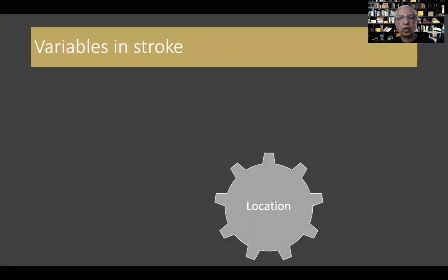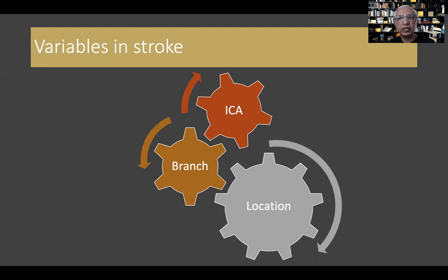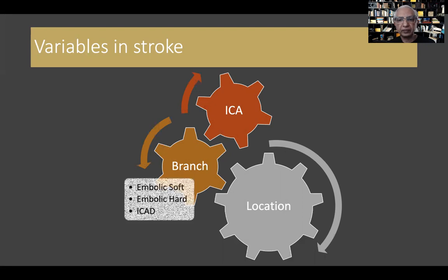The first variable is the location. You can have an occlusion in a branch vessel like the MCA, ICA, or ACA, or it can be in the internal carotid itself at the point of bifurcation from the common carotid. We'll realize they are all different and unique in their own ways as to how we approach and treat them.